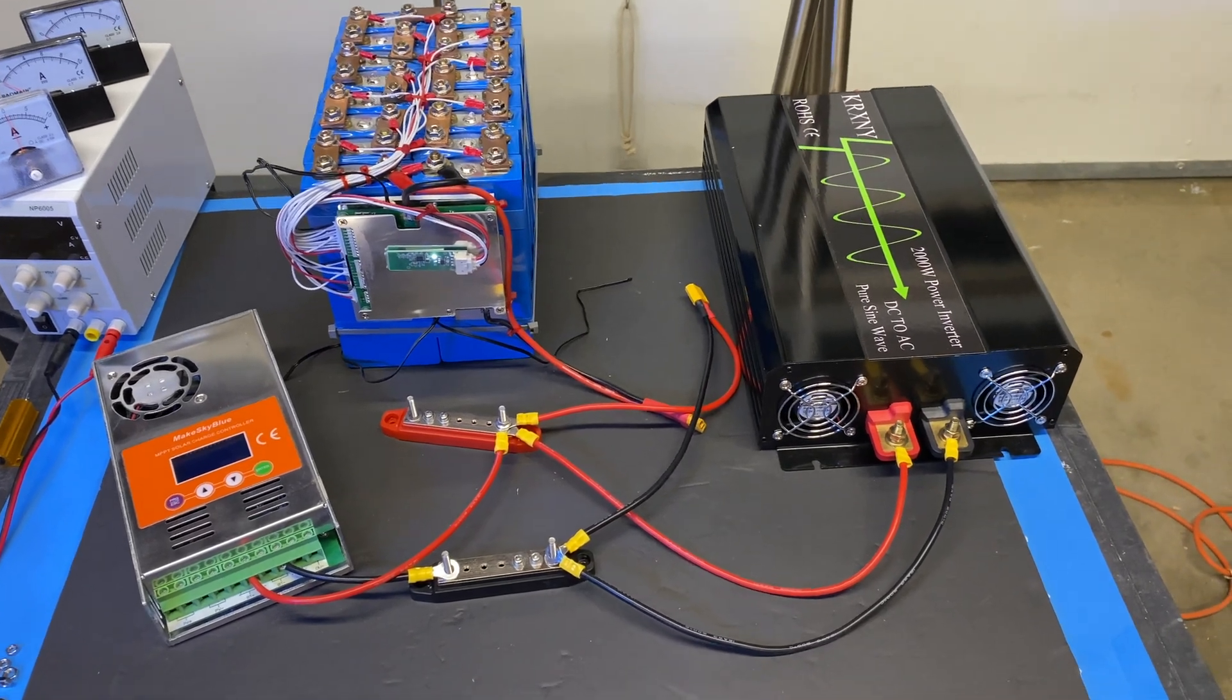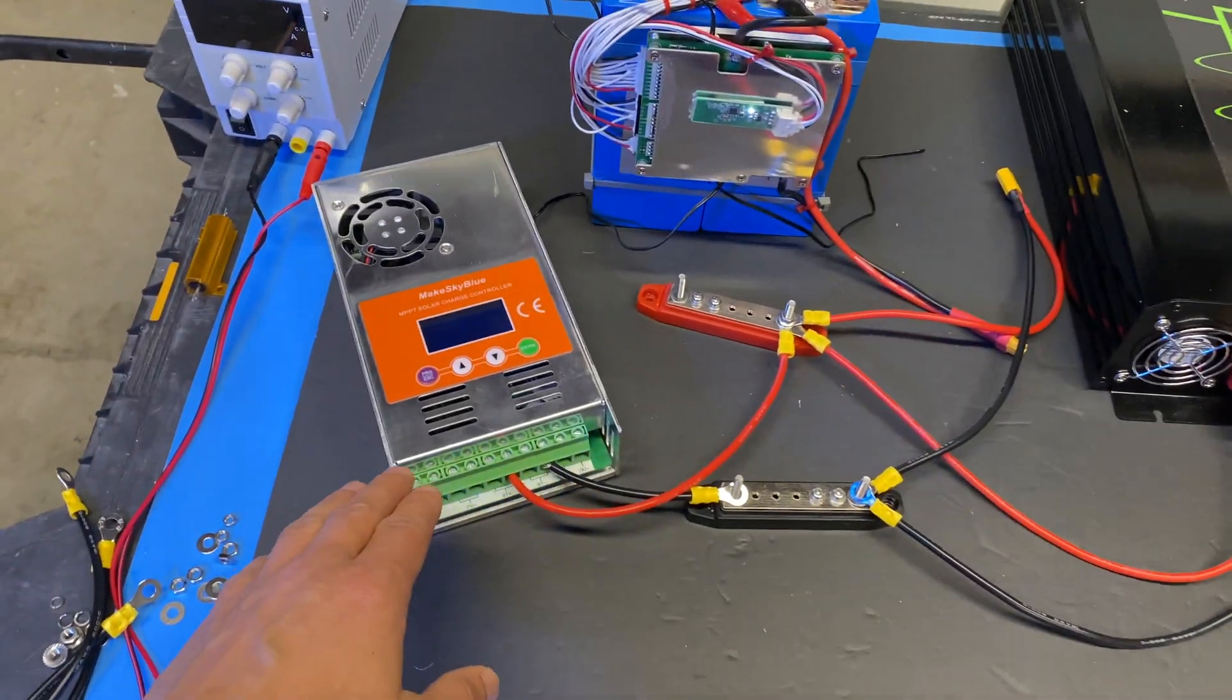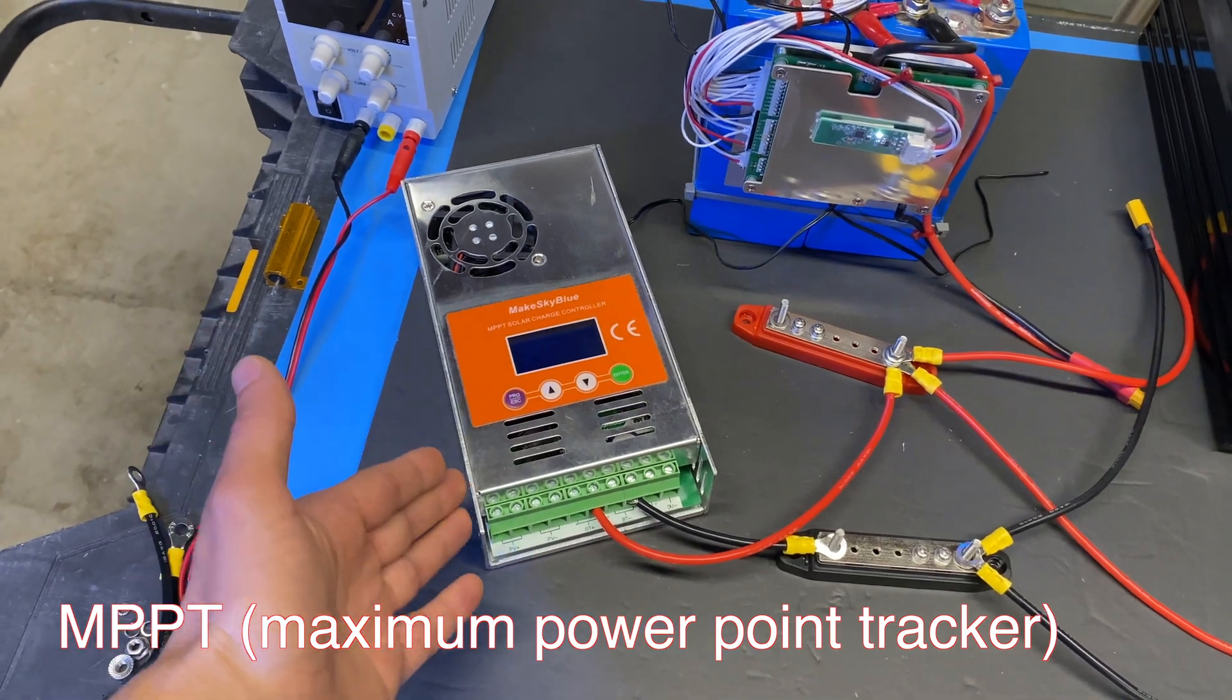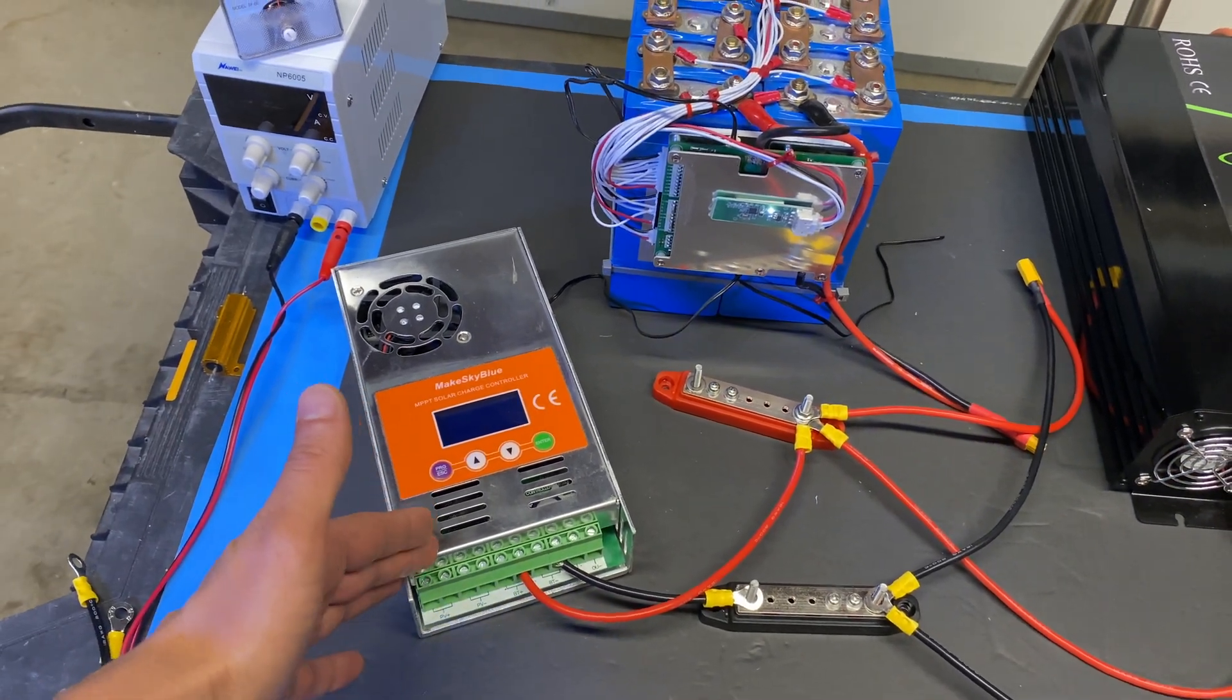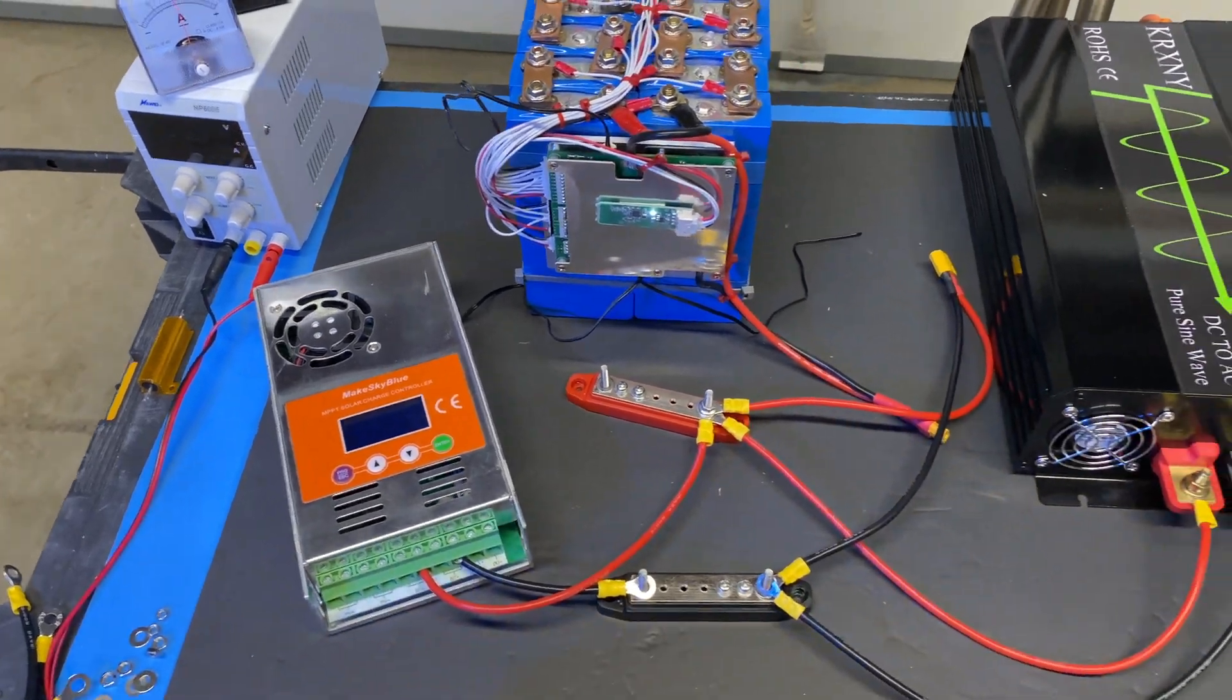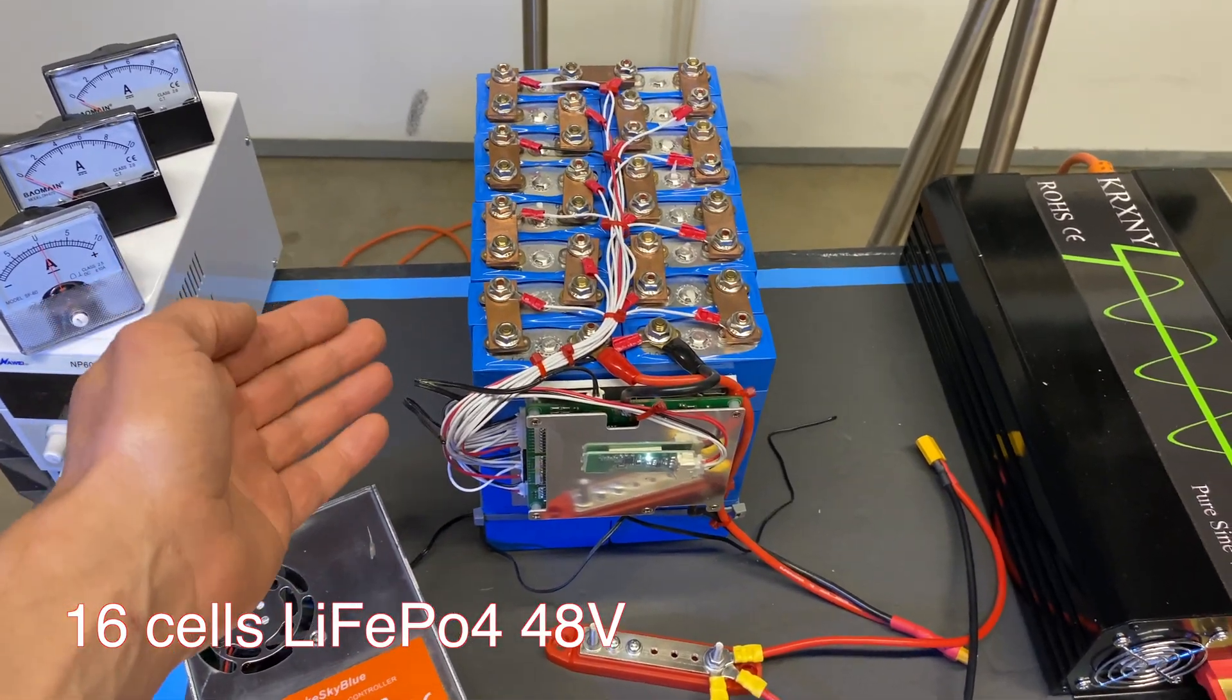What I have on the table right now are the three main components that every off-grid system contains. First is an MPPT charge controller. The role of this device is to get power from solar panels, step down this power to the battery voltage, and squeeze maximum power from solar panels. Second is the battery. In my case it's lithium iron phosphate batteries, 16 cells.